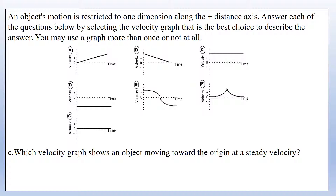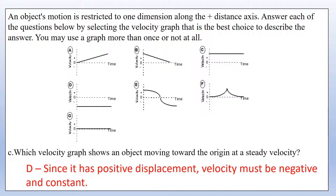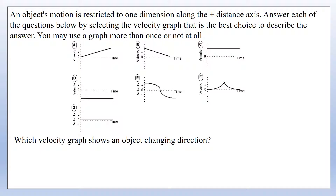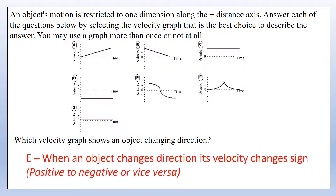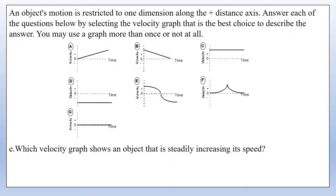Which graph shows an object standing still? We simply want velocity equals zero at all times — that's clearly option G. Which graph shows an object moving towards the origin at a steady velocity? That's the opposite of part A, so we want a constant negative velocity — which is graph D. Which graph shows an object changing direction? The velocity must go from positive to negative or vice versa — that's graph E.